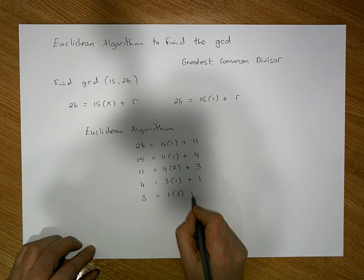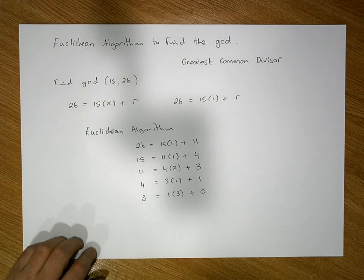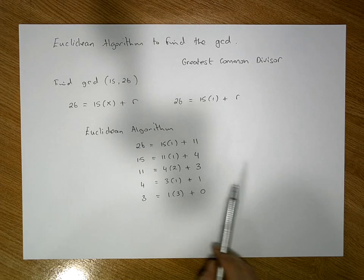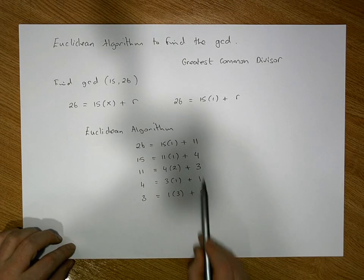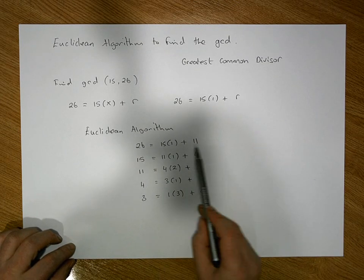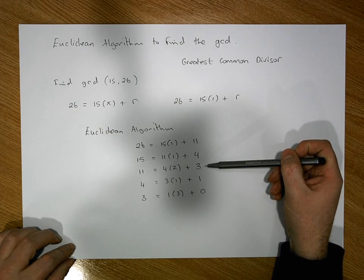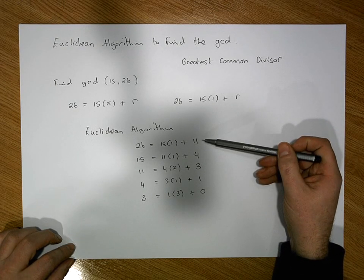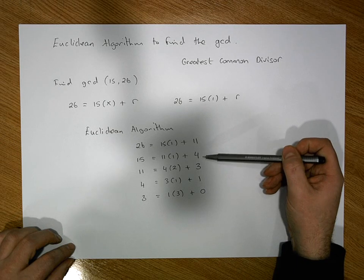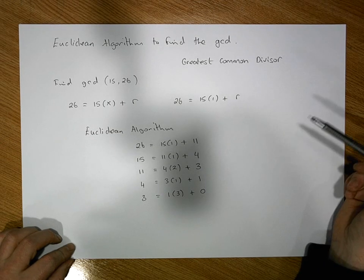What we've had is multiple passes of the division algorithm. What we can hopefully see is that we have a list of remainders, and the remainders are decreasing as we go down through them.